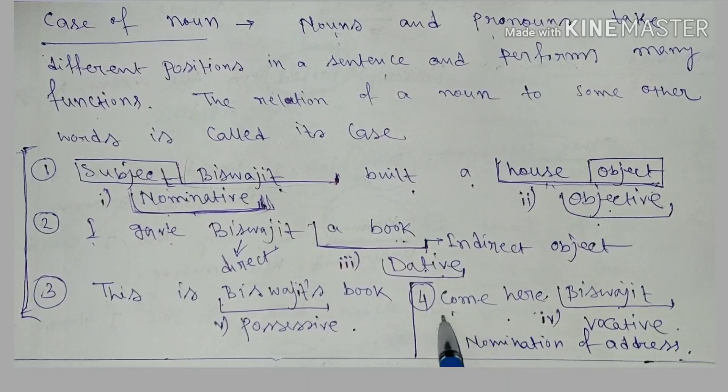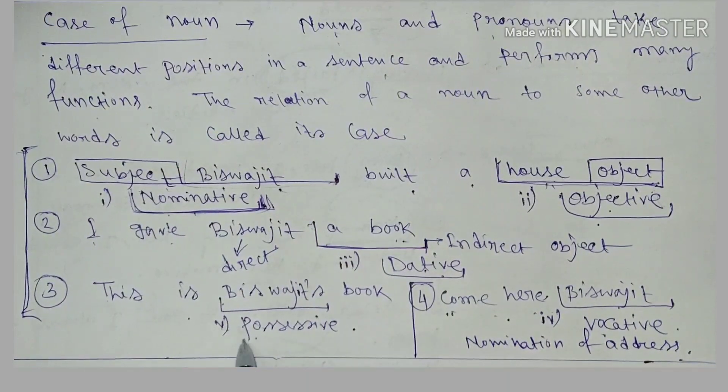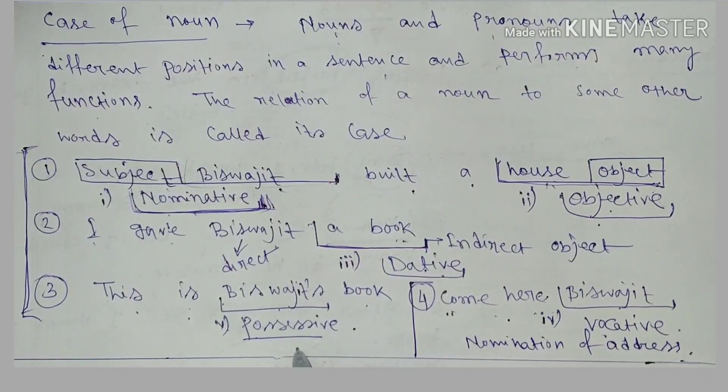So this is the fourth one, that is vocative, and the last and the fifth one is possessive case. This is Biswajit's book. It is possessive case.